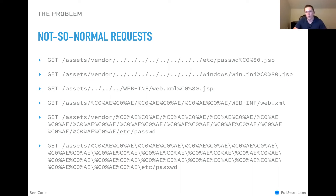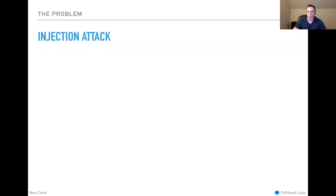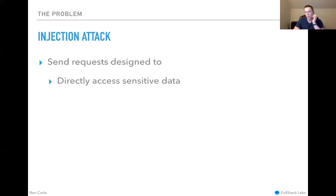We saw various forms of injection attacks. There were requests designed to do a number of different things. Some were designed to directly access sensitive data — those paths were trying to hit password files, trying to directly reach sensitive data files that might be living on the server. Our configuration wasn't going to allow that, but they were taking a shot at whatever misconfigured system we might be using.